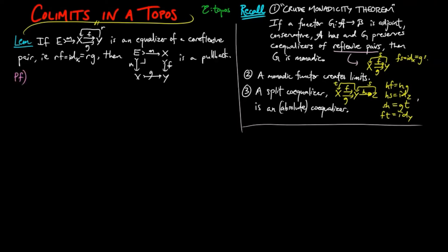For the proof, let PQ be morphisms such that FP is equal to GQ, then P is equal to RFP is equal to RGQ is equal to Q, since RF and RG are equal to the identity on X.